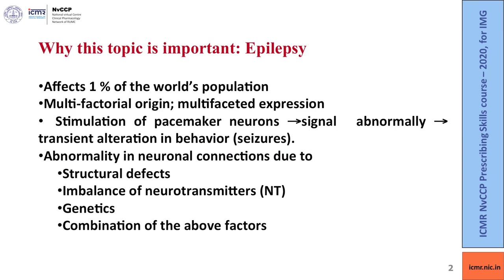Epilepsy affects 1% of the world population and is the most common disorder of the brain. It has multifactorial origin and multifaceted expression. There is stimulation of a pacemaker neuron which leads to abnormal signals and transient alteration in behavior, manifesting as seizures. Abnormalities in neural connections occur due to structural defects, imbalances in neurotransmitters like glutamate and GABA, and channels like sodium or calcium channels, due to genetic factors or a combination of all these.